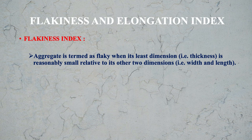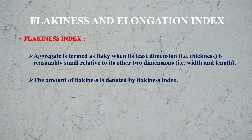What is Flakiness Index? An aggregate is termed as flaky when its least dimension, that is the thickness, is reasonably small relative to its other two dimensions — width and the length. The amount of flakiness is denoted by the Flakiness Index.